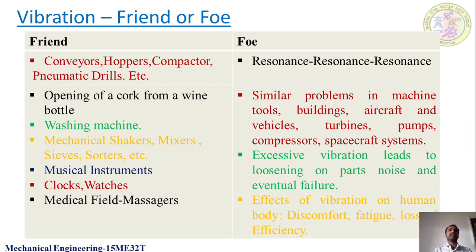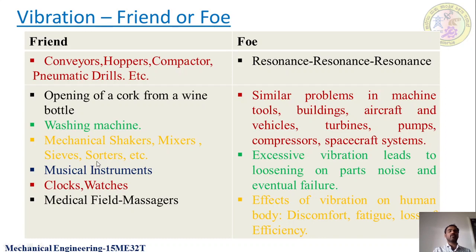Some vibrations act as friends - on the left side you can see the applications where vibration is desirable. Conveyors, hoppers, compactors, and pneumatic drills are systems where vibration is desirable and acceptable. Without vibrations these things would not work - for example, opening a cork in a wine bottle, or a washing machine: if the washing machine vibrates, only then does the washing of clothes happen. Mechanical shakers, mixers, and sorters - if you want to sort things, vibration is desirable in all these applications.